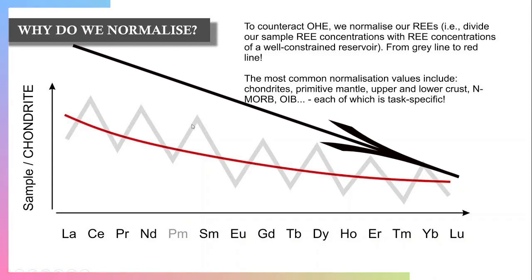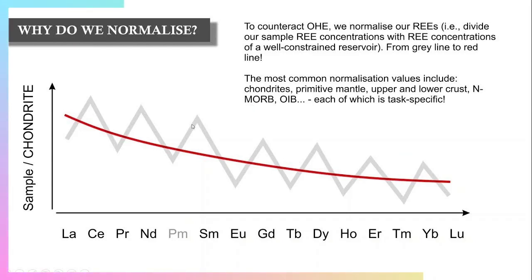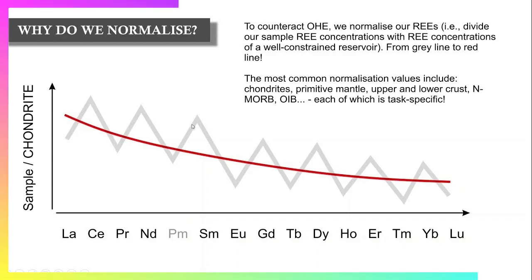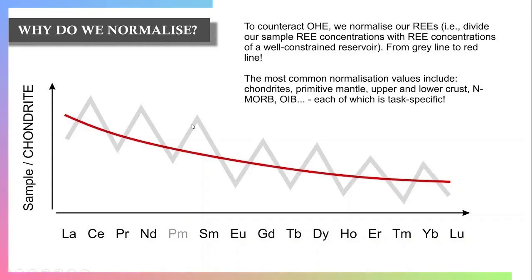As explained in the other video on Basics of Geochemistry, the Oddo-Harkins effect is when elements with even atomic numbers have higher concentrations than their immediate neighbors with odd atomic numbers. Because of this effect, normalization is required — we normalize to counteract the Oddo-Harkins effect.